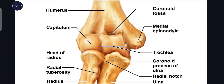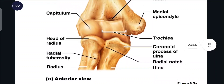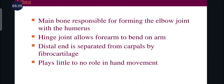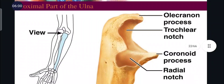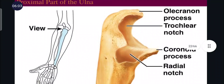The epiphysis of the humerus forms the joint between the humerus, radius, and ulna. The radius is attached to the ulna but does not articulate with the humerus directly. The ulna is responsible for forming the elbow joint with the humerus — a hinge joint that allows the forearm to bend on the arm. The distal end of the ulna is separated from the carpals by fibrocartilage and plays little role in hand movement. The proximal ulna consists of the olecranon process, trochlear notch, coronoid process, and radial notch.